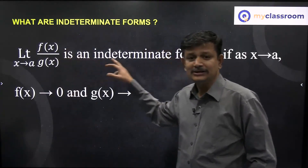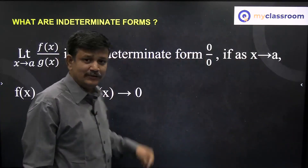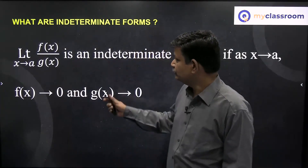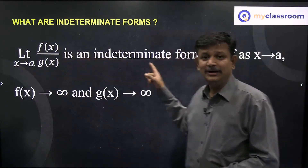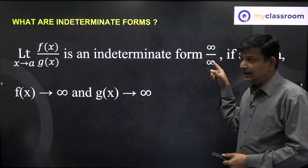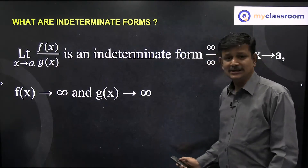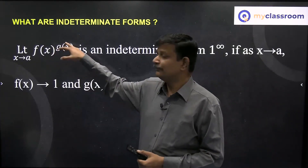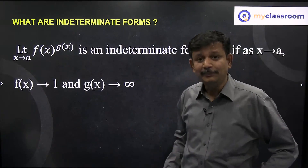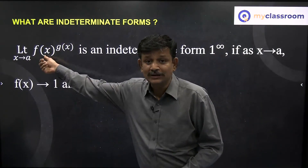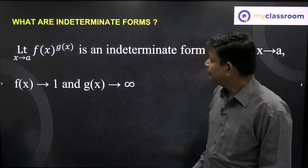To summarize: the limit of f(x) by g(x) as x approaches a is of indeterminate form 0 by 0 if f(x) approaches 0 and g(x) approaches 0. Similarly, it is of indeterminate form infinity by infinity if both numerator and denominator tend to infinity. And it is of indeterminate form 1 power infinity if f(x) approaches 1 and g(x) approaches infinity.